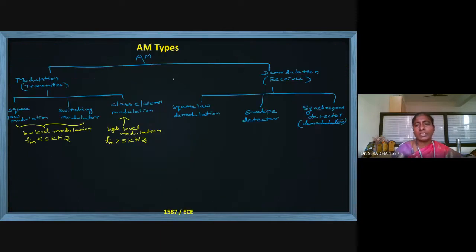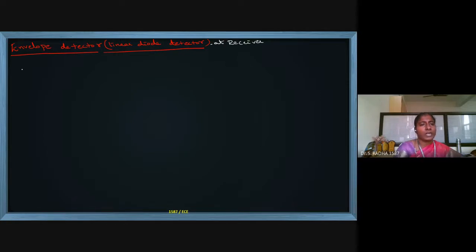The next method after square law demodulation is the envelope detector. The envelope detector's other name is the linear diode detector. This is also used at the receiver side to get back the original message signal. The input is given through R_s, then a nonlinear device (diode), followed by R and C.